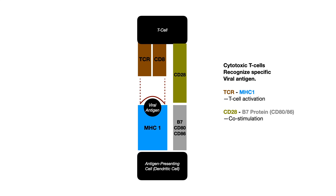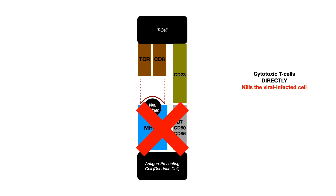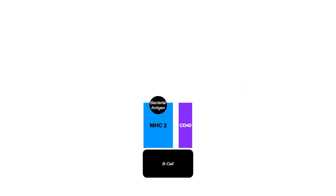Co-stimulation essentially strengthens the connection and recognition between the antigen presenting cell presenting viral antigen on MHC1 and the T cell recognizing that viral antigen, so that it can activate and become a cytotoxic T cell. After all of these connections and after recognition of the viral antigen, you activate the cytotoxic T cell and directly kill the viral infected cell. Now let's look at the alternative example — MHC2.